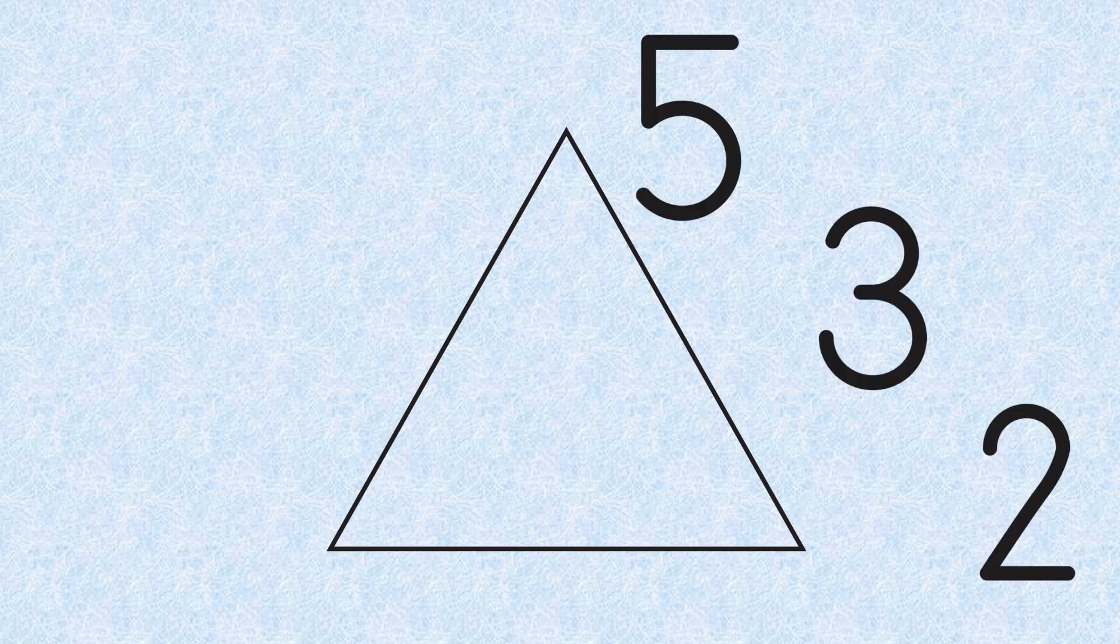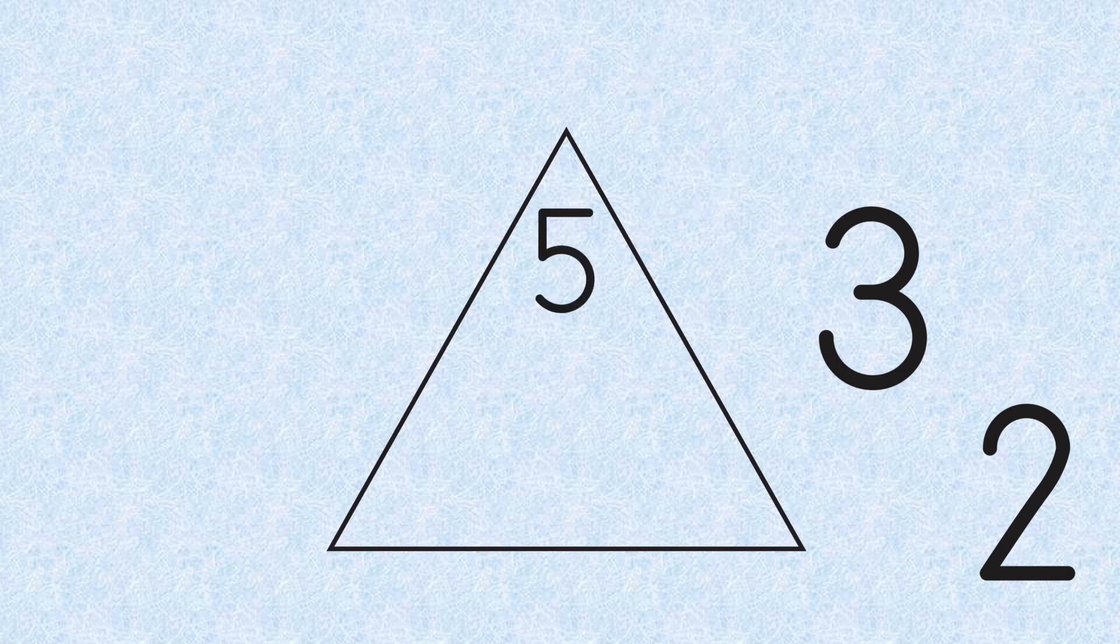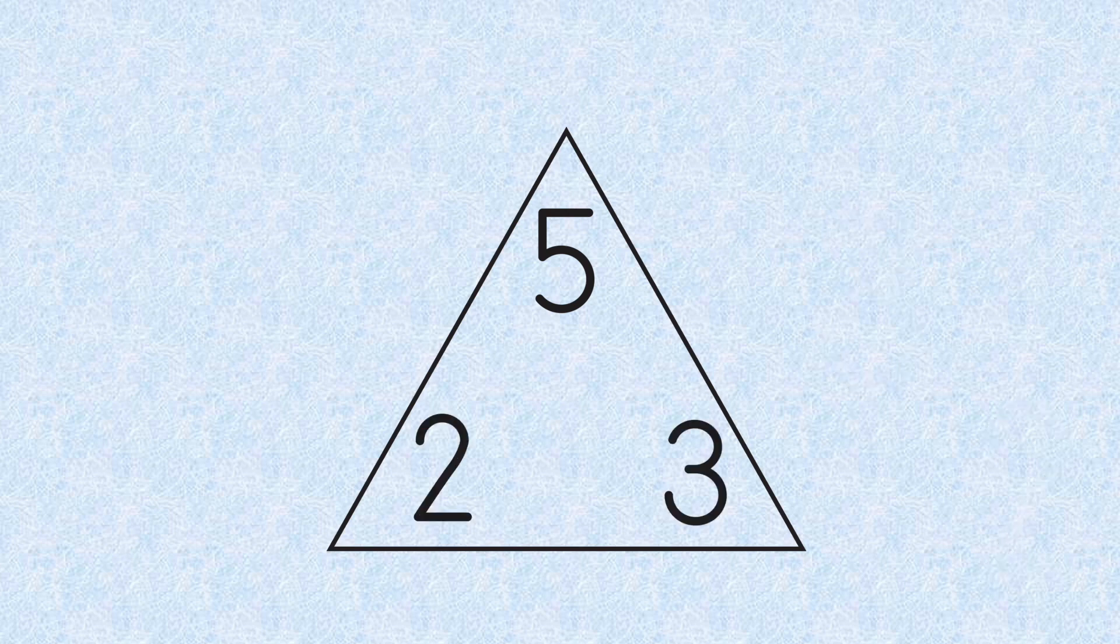Here's our triangle and our numbers. Our Fact Family numbers today are 5, 3, and 2. The number of the greatest value goes up to the top corner. The other two numbers can go in the bottom corners. The order doesn't really matter. We will see why later.